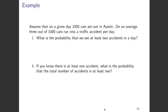Let us study the Poisson distribution using a simple example. Assume that on a given day 1000 cars are out in the city of Austin, and on average three of these thousand cars run into a traffic accident per day. The lambda of this Poisson distribution is going to be 3, because n is 1000 and p is 3 over 1000, giving lambda equals n times p equals 3.